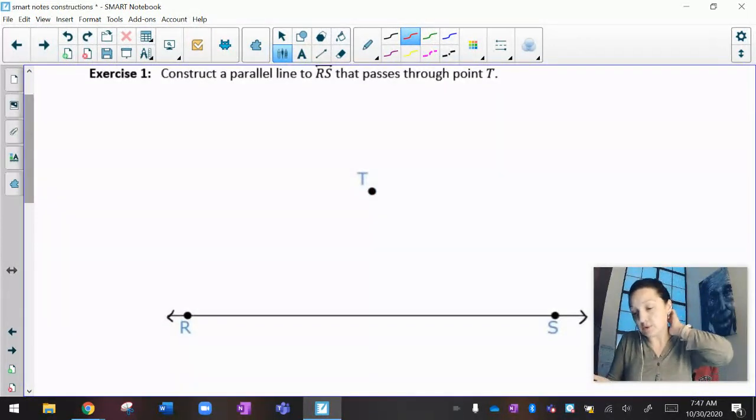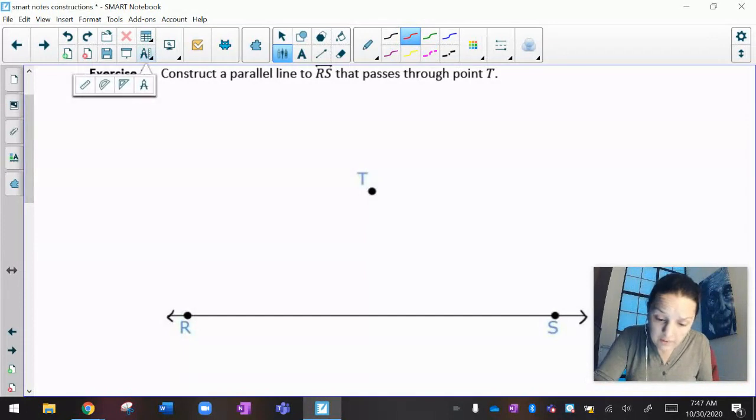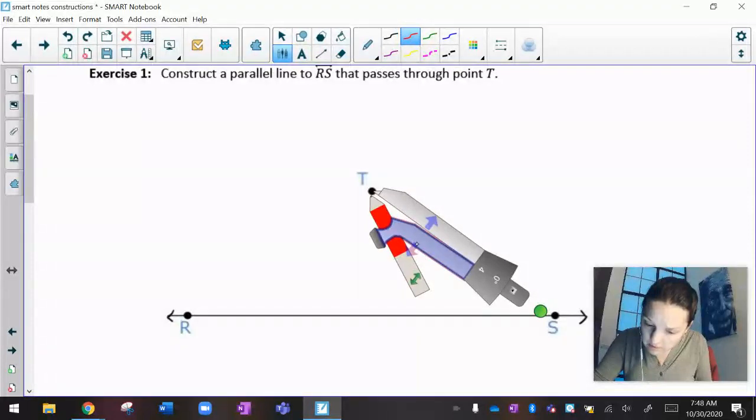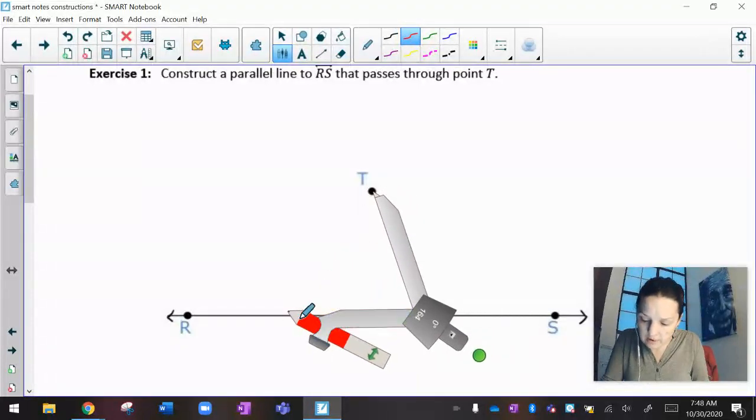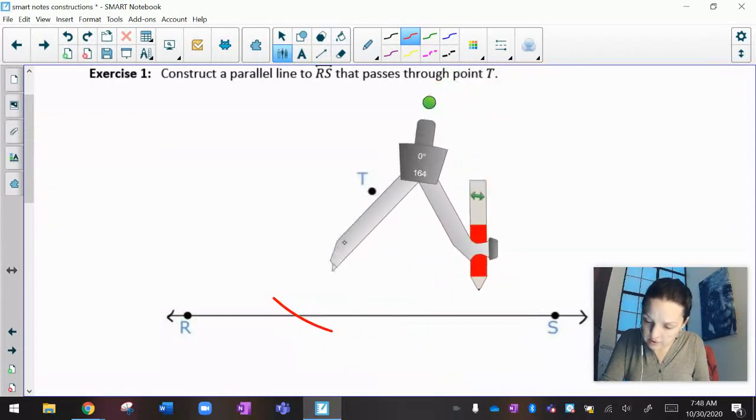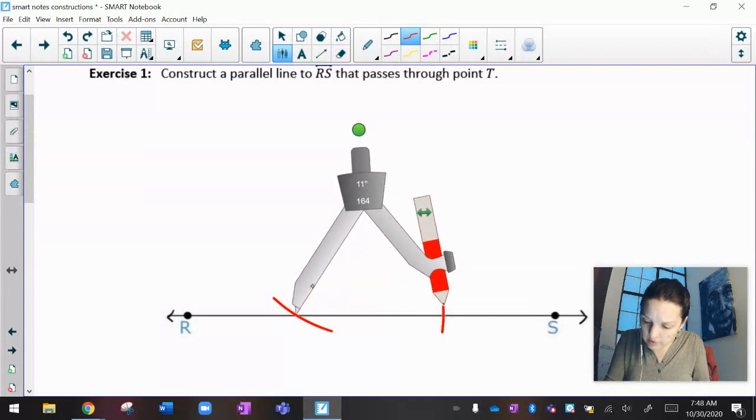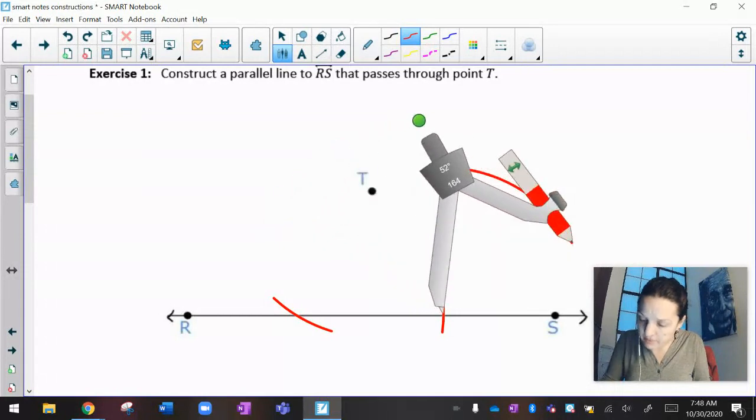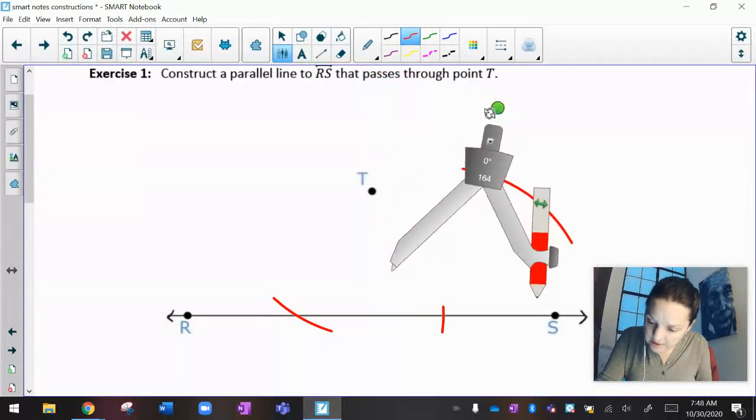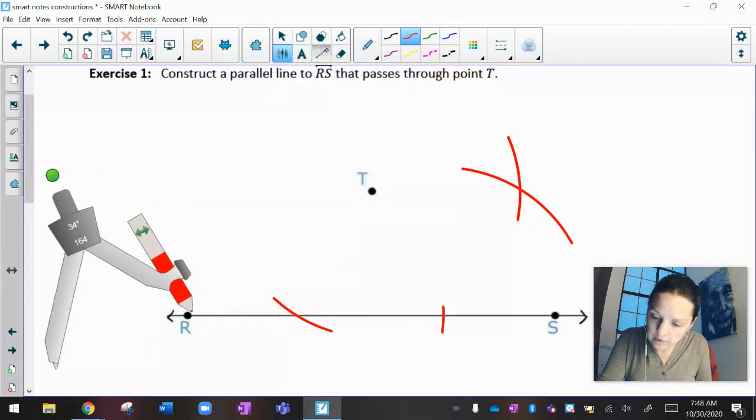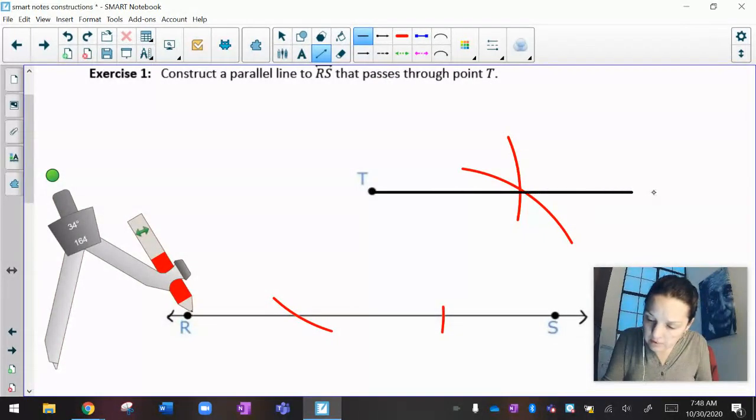Let's do another one. Construct a parallel line to RS that passes through T. I'm going to grab my compass and I'm going to open it up from T to the bottom, so it's a little bit slanted. Draw an arc. Move my compass, draw another arc. Move my compass, draw an arc up in the sky. Move my compass last but not least to T, and draw an arc so that the ones up in the air hit each other. And there's my parallel.